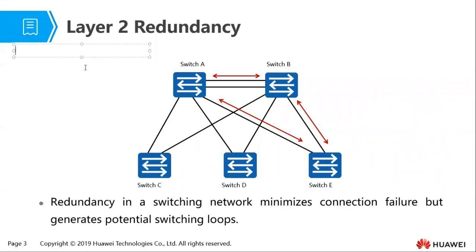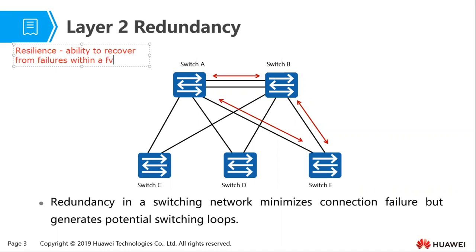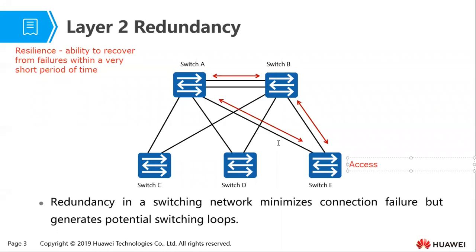One of the desired attributes of an enterprise network is resilience — the ability to recover from failures within a very short period of time. As switches increase in your network and you want to plan for scalability, you'll most of the time adopt the hierarchical layer architecture where switches that interconnect to end devices are referred to as access layer switches.